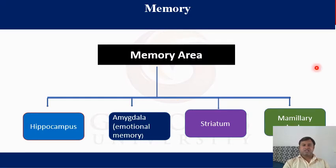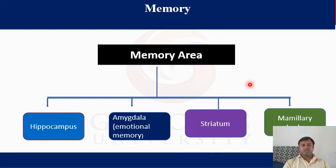There are some brain areas responsible for memory: the hippocampus, amygdala, striatum, and mammillary body. The hippocampus is the major area and is responsible for long-term potentiation — that is, how short-term memory is converted into long-term memory.